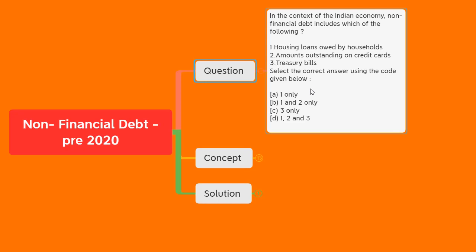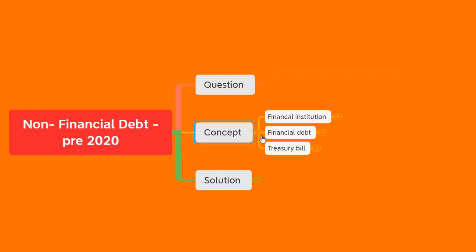The question is: In the context of the Indian economy, non-financial debt includes which of the following? The first statement is housing loans owned by households. The second is amount outstanding on credit cards. The third is Treasury bills. The options are: one only, one and two only, three only, or one, two, and three.